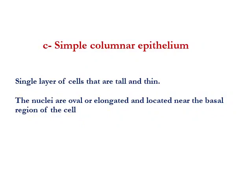Simple non-ciliated columnar epithelium lines most of the digestive tract, like the stomach, intestine, and gallbladder. In the intestine, among the columnar cells there are other types of epithelial cells called goblet cells, which are mucus-secreting cells and are considered a gland. This type of tissue offers protection, lubrication, absorption, and secretion.